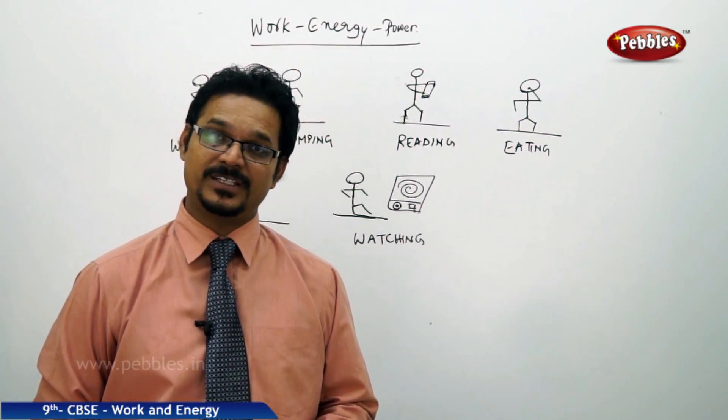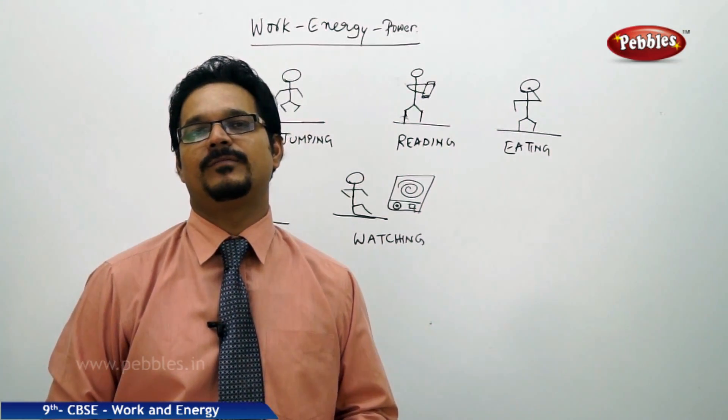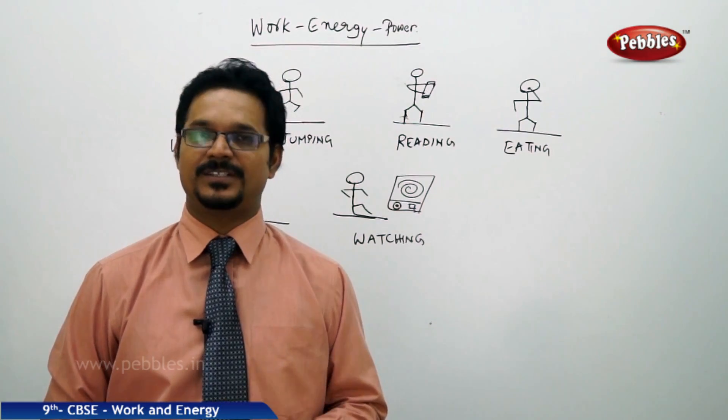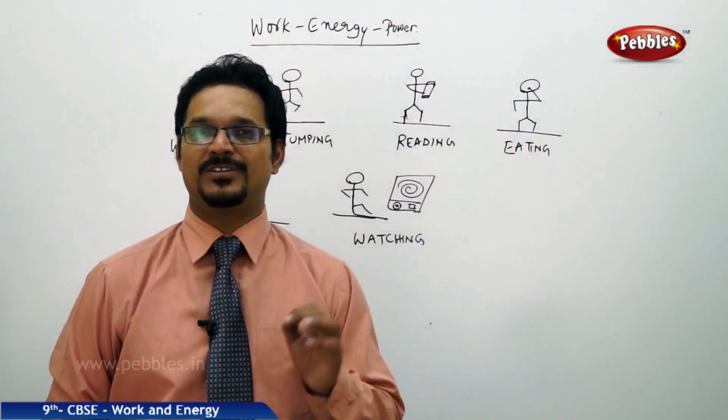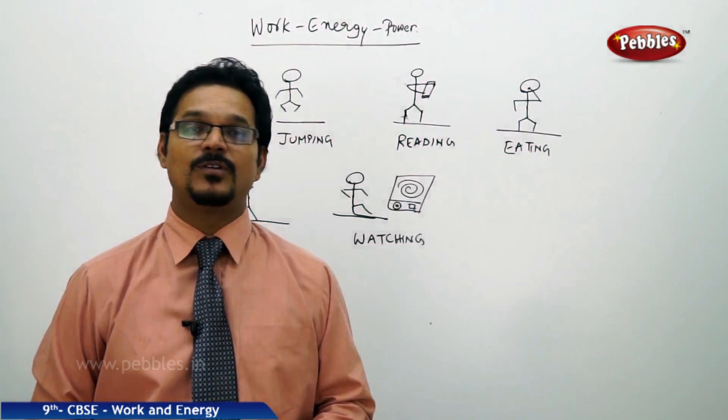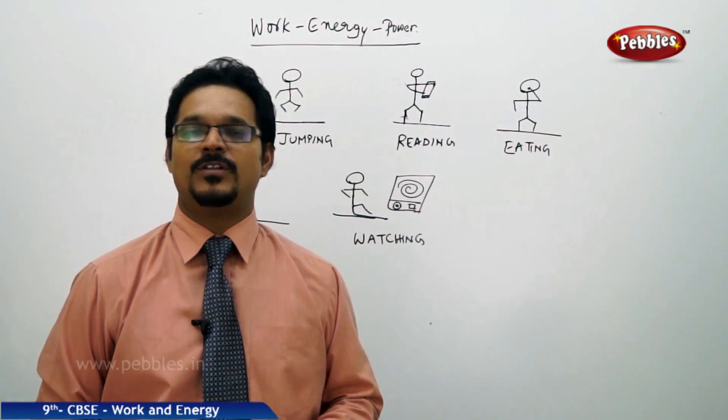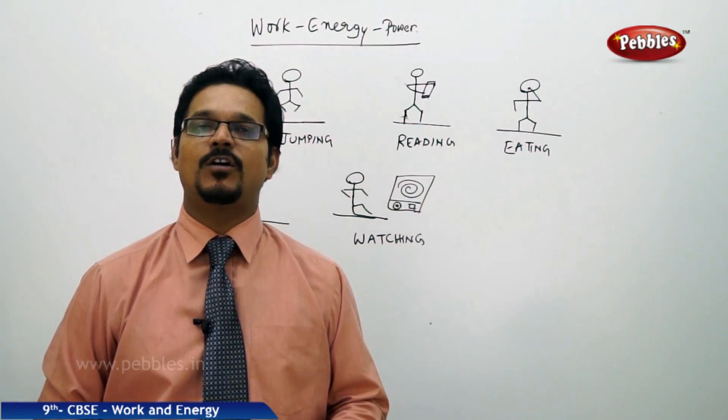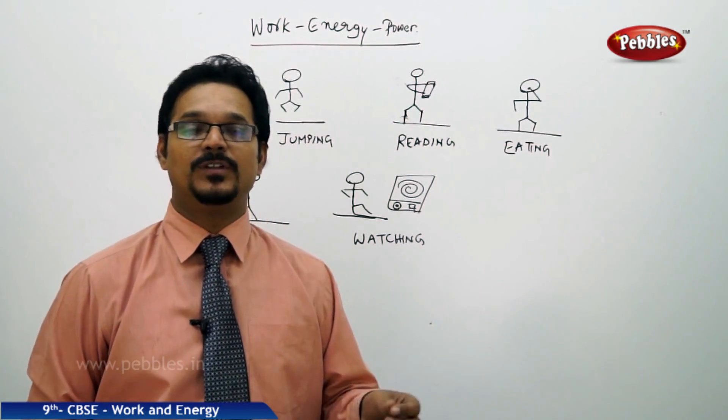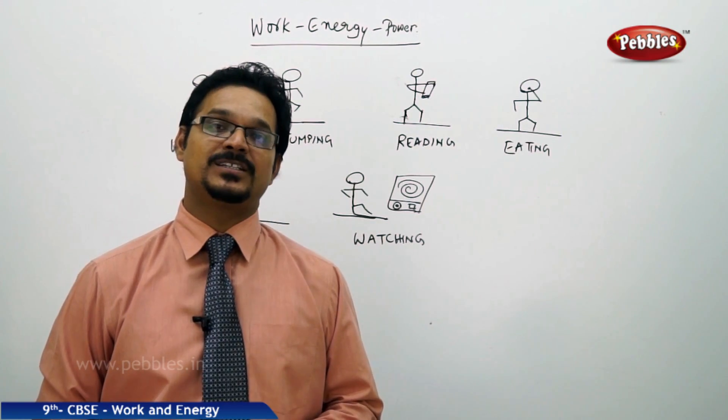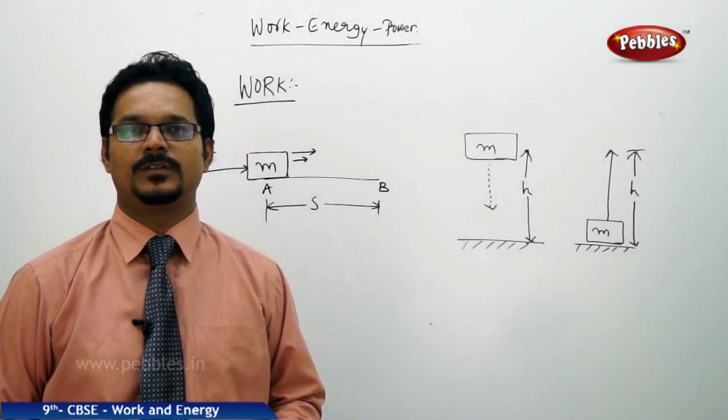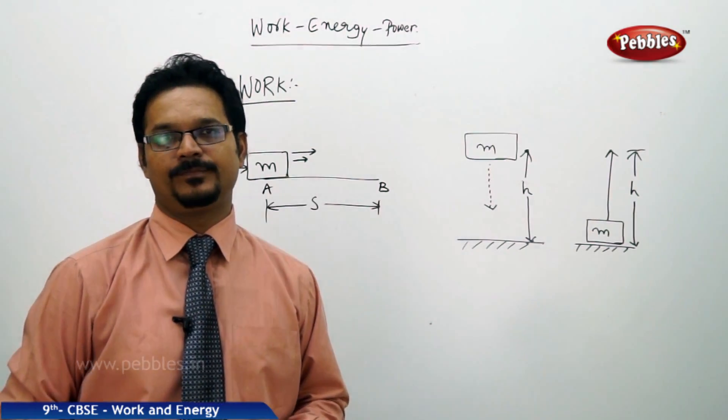So all these are works, but do you agree with it in physics? Not at all. Because physics says if you want to tell something in physics it should be measurable. If it is not measurable that is not physics. So work also should be measurable. Now how it can be measurable and how can we say that this is work and this is not? And what is the relationship between energy and power with work? We are going to discuss in detail in this chapter called work, energy, power.